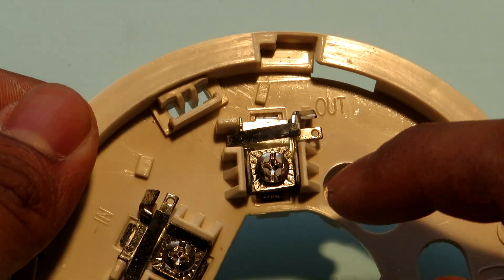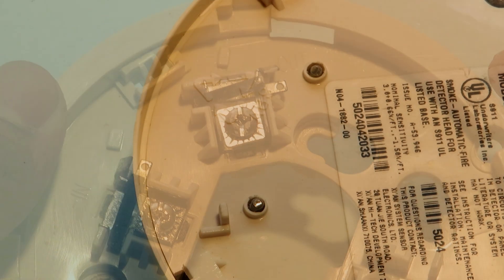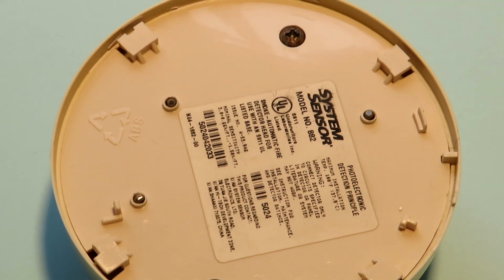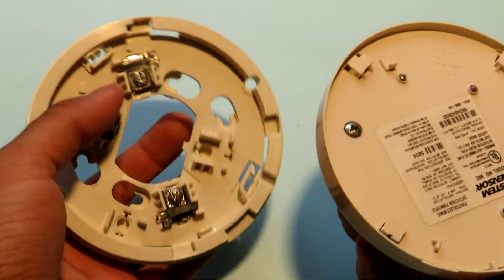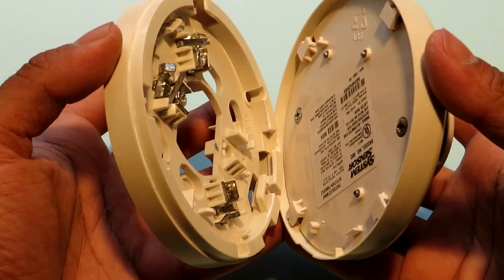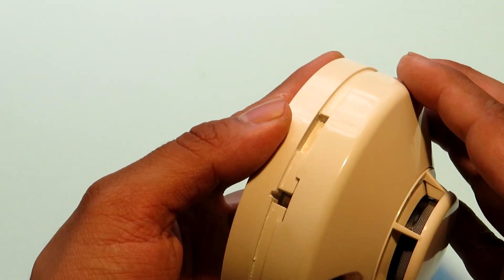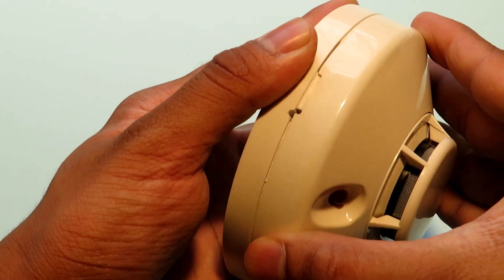So these are the three terminals positive in out, negative in and negative out. You can see that when we fasten the detector unit with the base the terminals mate with each other and they properly make the circuit and that's how the detector is powered.